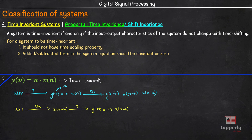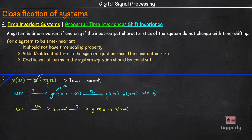The property we learned from this example is that the coefficient of the terms in the system equation should be constant. For instance, if the coefficient of x(n) here was some constant like 5 instead of n, then the system would be time invariant. So everyone please pause the video and try to check if the system y(n) = 5 · x(n) is time variant or time invariant, and comment your answers in the comment section.